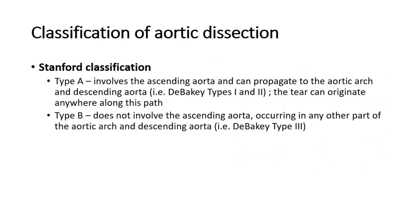Another classification is the Stanford classification. Type A involves the ascending aorta and can propagate to the aortic arch and descending aorta, similar to DeBakey types 1 and 2. Type B does not involve the ascending aorta; it occurs in any other part of the aortic arch and descending aorta, similar to DeBakey type 3.